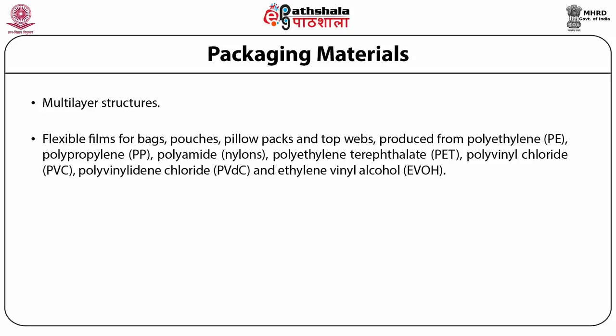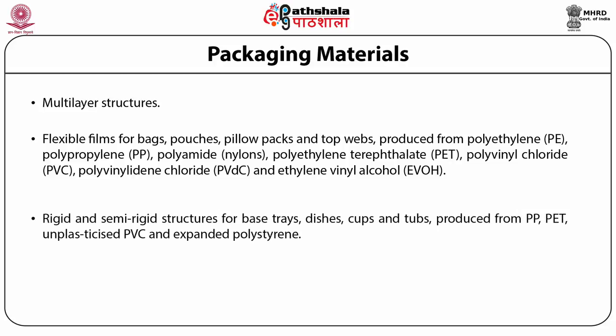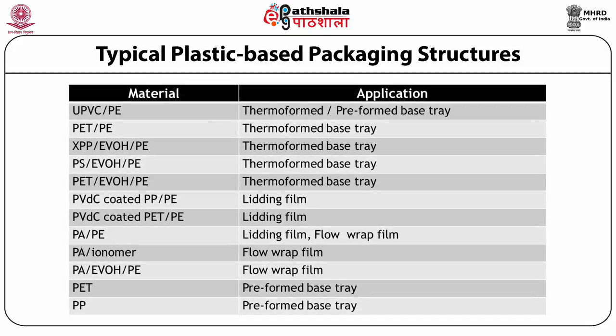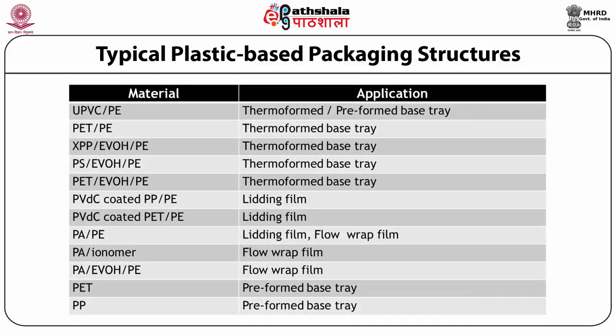Rigid and semi-rigid structures are commonly produced from polypropylene, polyethylene terephthalate, unplasticized polyvinyl chloride, and expanded polystyrene. The table shows typical plastic-based packaging structures and their applications.